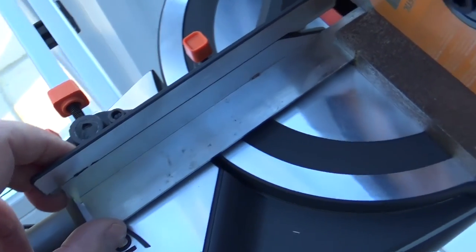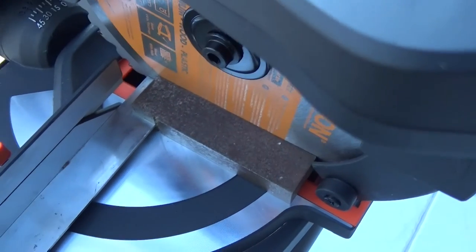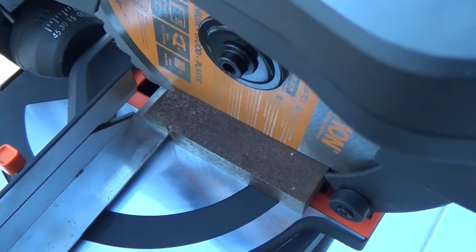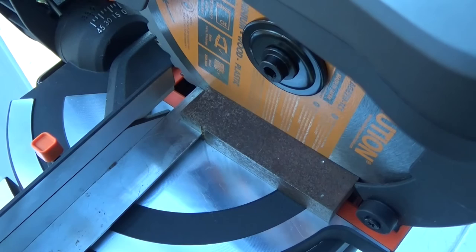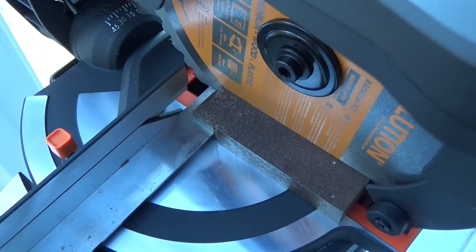As you can see we're against the fence and we're flat against the blade, so I'm going to tighten that up. That means then that anything we cut is going to be at 90 degrees to the fence.